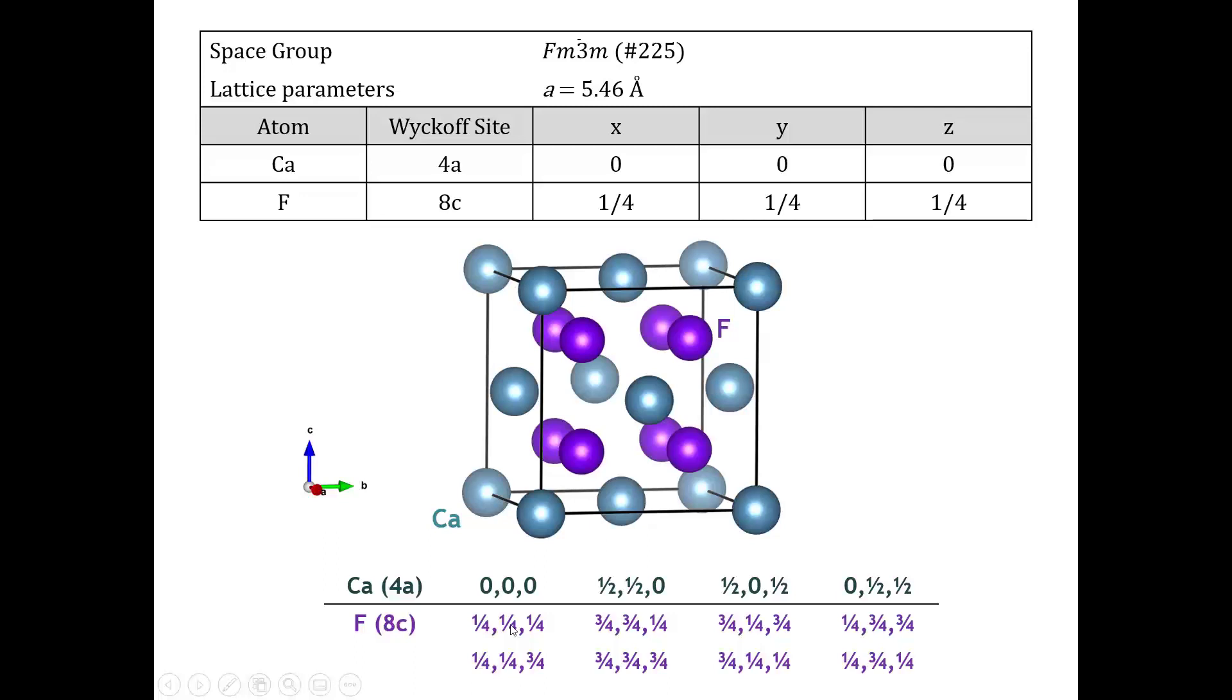For the fluorine, there are eight atoms, one of them at 1/4, 1/4, 1/4, which would be this one, and then one of them at 1/4, 1/4, 3/4, which would be this one. When we add these different centering vectors, you know, adding 1/2,1/2,0 takes this atom and generates this one. And that same 1/2,1/2,0 would take this atom and create this one.